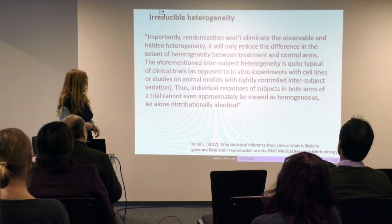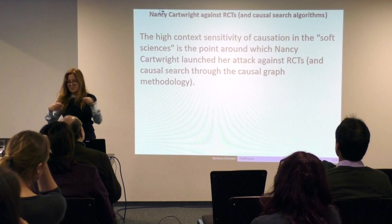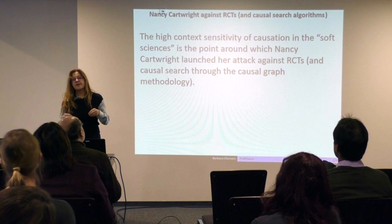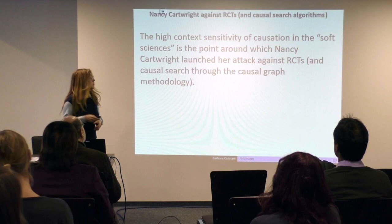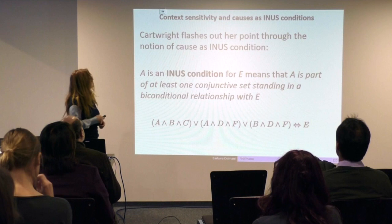This goes along the line of what Cartwright argued — she grounds her criticism of RCTs as gold standards in medicine but also in economics on grounds of this context sensitivity. And this is done also by drawing on the conception of causes as INUS conditions. An INUS condition — if A is an INUS condition for E — means that A is part of at least one conjunctive set standing in a biconditional relation with E. So it's: A and B and C implies E, or A and D and F, or E and D and F.